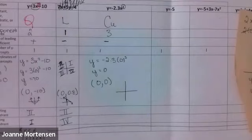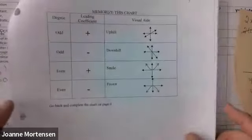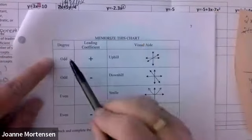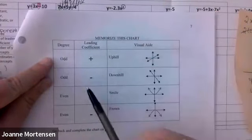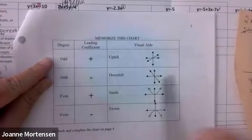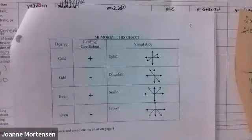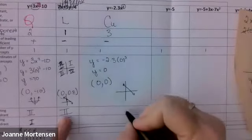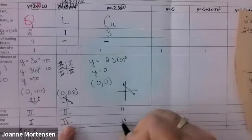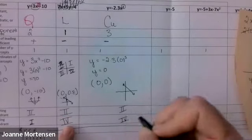Using the end behavior chart: the degree is three — odd — and it's negative, so it's going downhill. It will have a wobble in the middle but for start and end behavior all I need to know is it's going downhill. So it starts in quadrant two and ends in quadrant four.